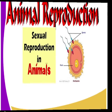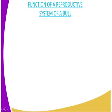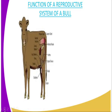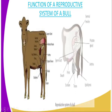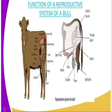Then we go to the functions of the reproductive system of male cattle, that is the bull. You can see an image there of a bull. It has several parts in the reproductive system. The first one we have is the seminal vesicle, which is a gland.